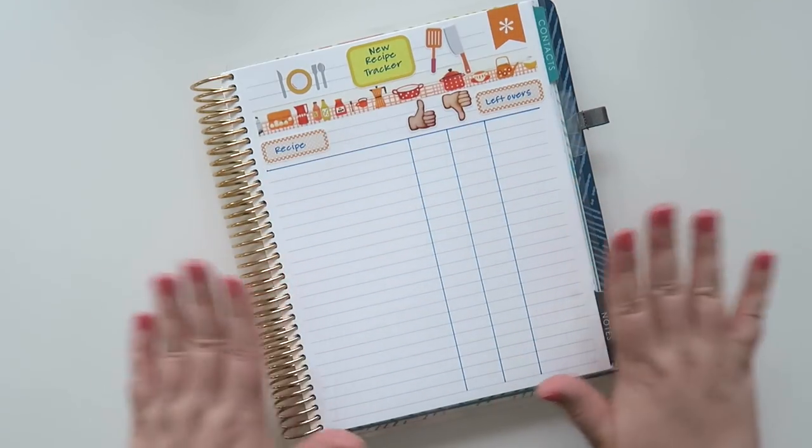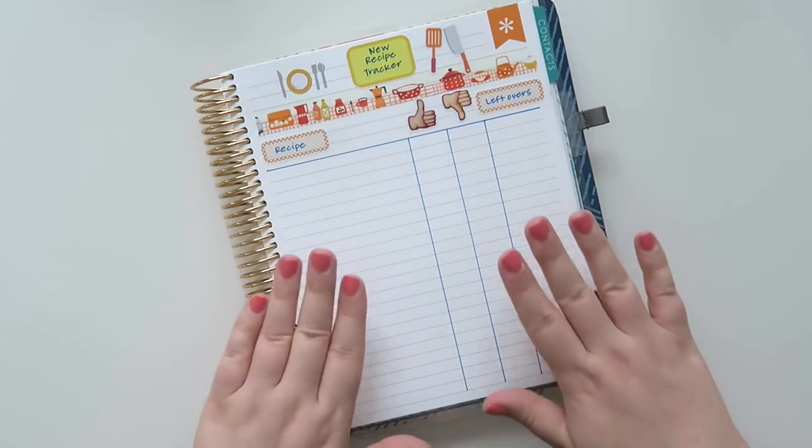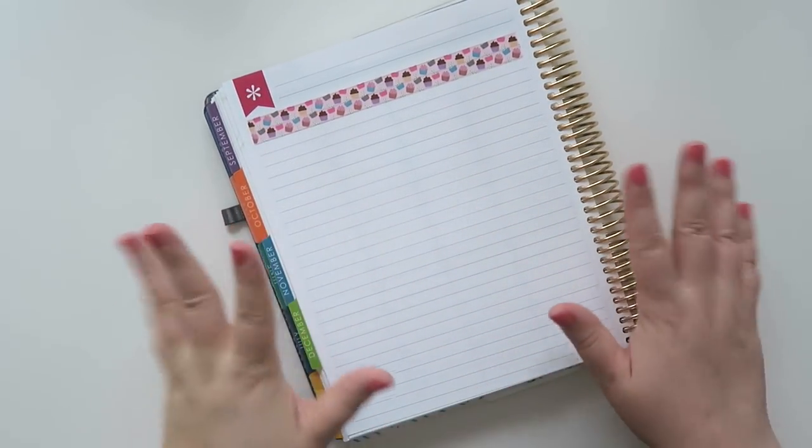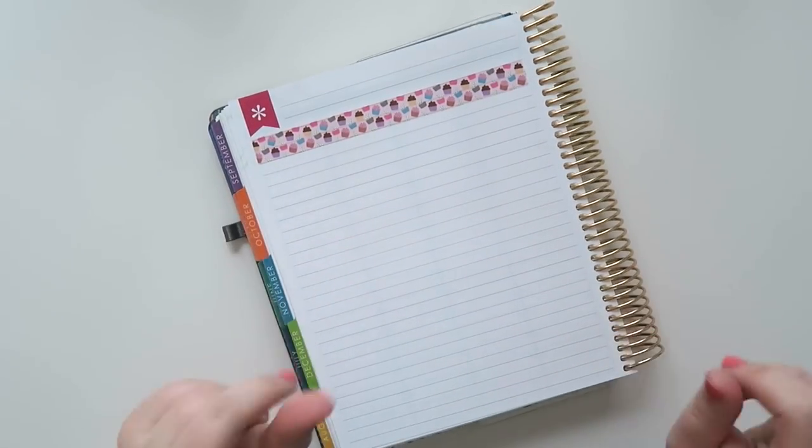All right. So this is how I am setting up my new recipe tracker for 2019. And I'm going to do the exact same thing for this page for baking. So I'm going to speed up this footage because I'm basically going to do the same thing and then we will chat at the end.